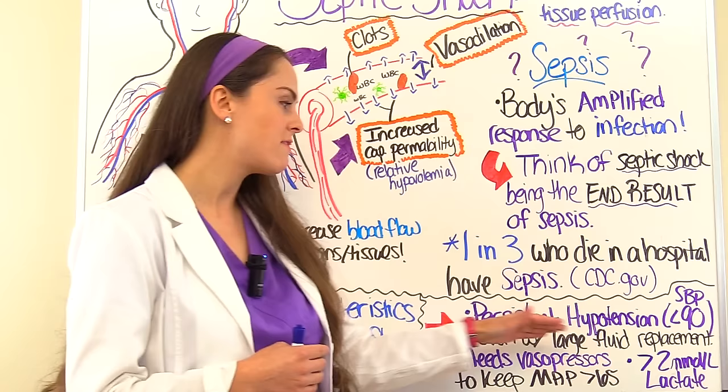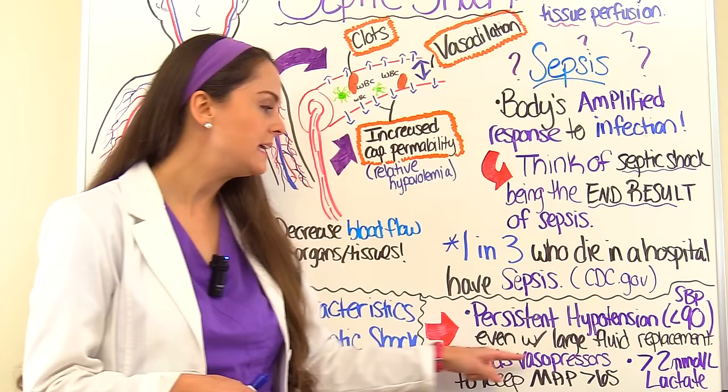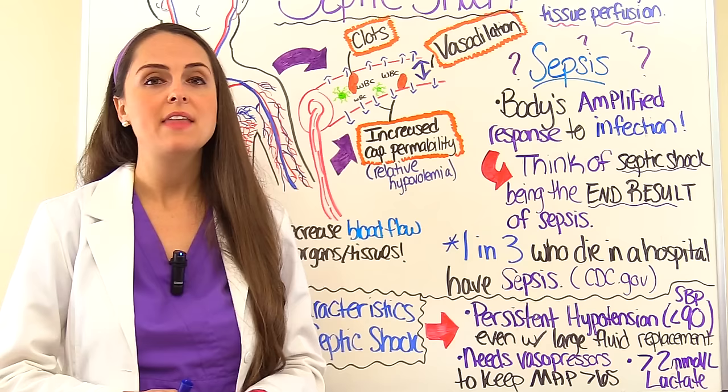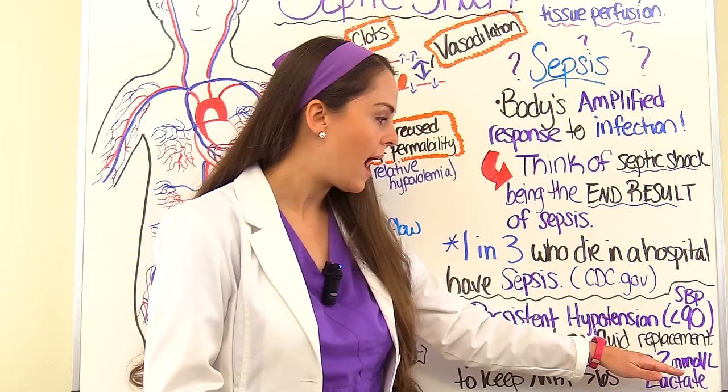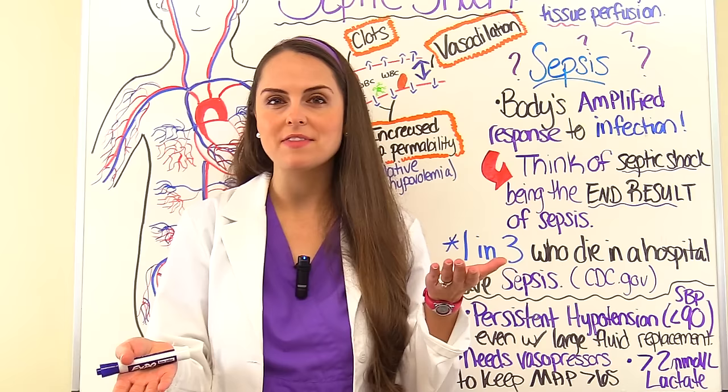In addition, in order to keep their mean arterial pressure (MAP) greater than 65, they need vasopressors such as norepinephrine to achieve that. The MAP tells us how well those vital organs are being perfused — if it's less than 65, that pressure going to those organs really isn't maintaining them. They will also have a serum lactate greater than 2 millimoles per liter if measured.